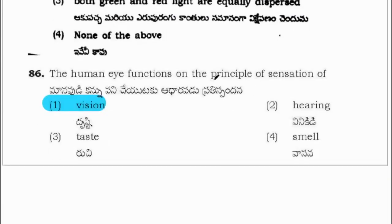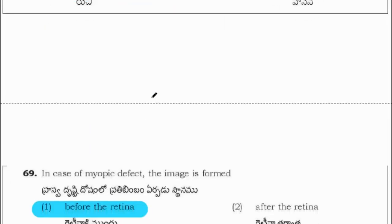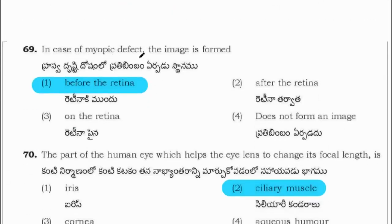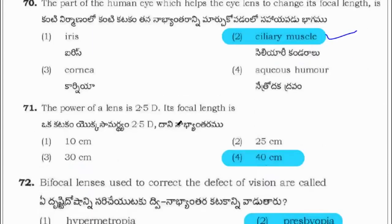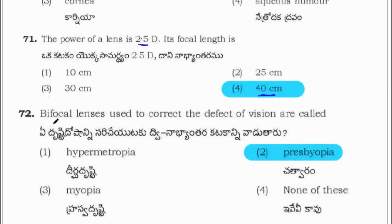The human eye functions on the principle of sensation of vision. In case of myopia defect, the image is formed before the retina. The part of the human eye which helps the eye lens to change its focal length is the ciliary muscles. The power of a lens is 2.5 D; its focal length will be 40 cm. Bifocal lenses are used to correct the defect of vision called presbyopia.